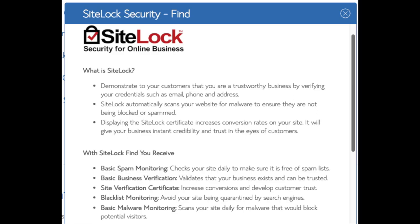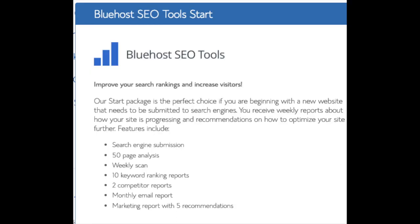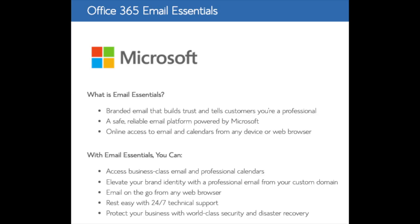I'd unselect SiteLock as there are really good free alternatives. CodeGuard creates daily backups and allows you to restore your site with a click of a button in case something happens — there are free alternatives that work just the same. SEO Tools Start you can keep unselected; this add-on submits your site to search engines and provides a ranking report, which you can do for free anyway. Office 365 Email Essentials is Microsoft Outlook, commonly included with Microsoft Office — if you'd like your email powered by this add-on feel free to keep it selected, but it isn't necessary. All of these add-ons are completely optional.